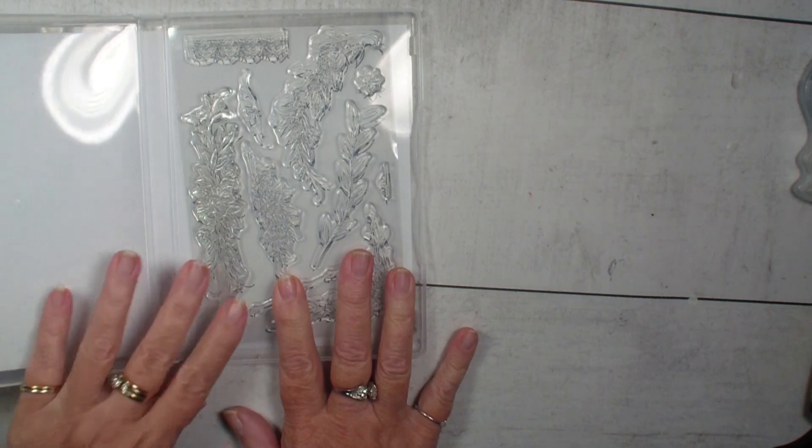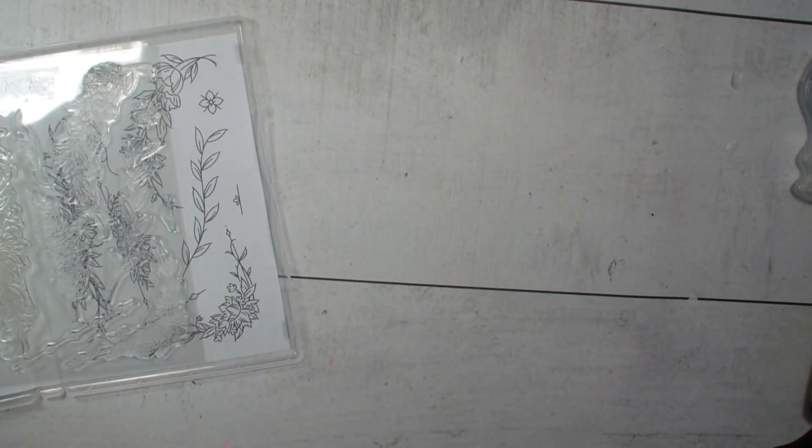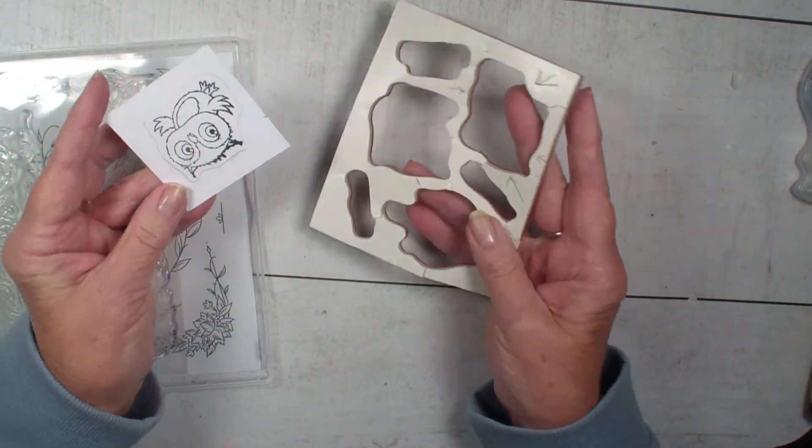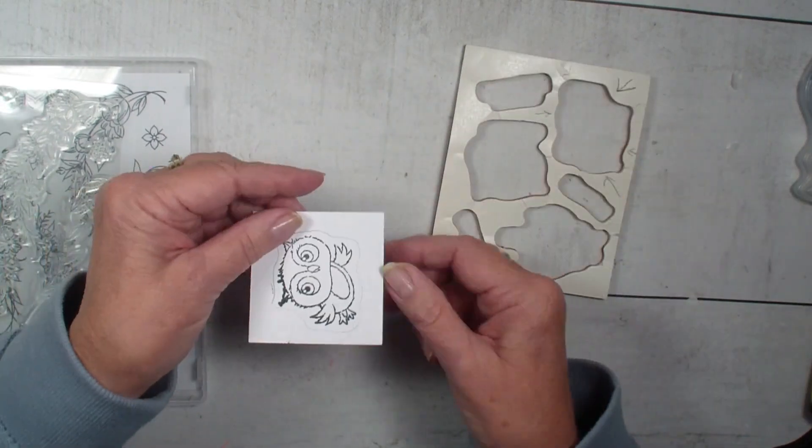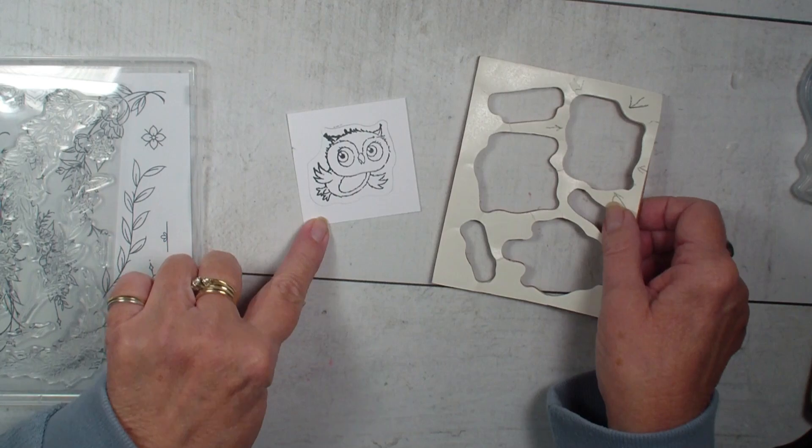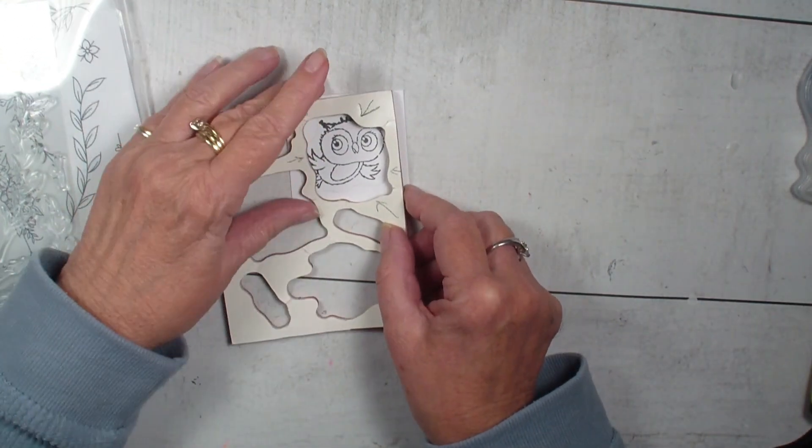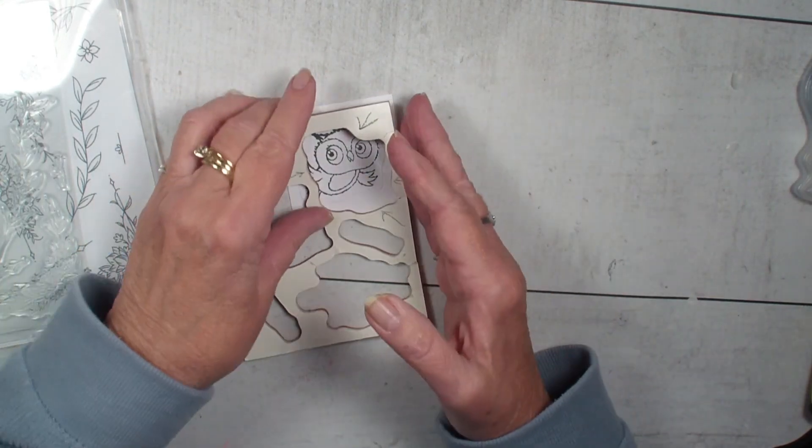Now the other technique that I shared was done with the cling and the red rubber, and I showed you how to save your excess cling and when you stamp your image then you can take this negative image, go over top and trace it and then cut it out so you have a layering technique.